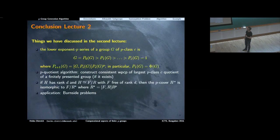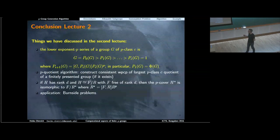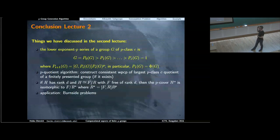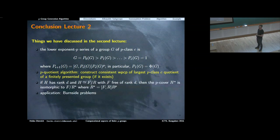Let me briefly recall what we have done yesterday. We started by introducing and discussing the lower exponent p-series. The terms of the series are P_i of G, and each section is elementary abelian. Every subgroup is characteristic in the group, and the first term is the Frattini subgroup. This was a really important series we used to prove the construction of a weighted polycyclic presentation — the p-quotient algorithm — which constructed this weighted polycyclic presentation and also an epimorphism from the given group onto the group defined by that presentation.